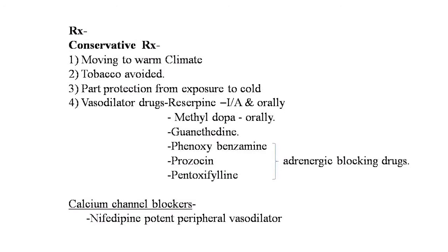Special investigations for Raynaud's disease include digital plethysmography with digital blood pressure determination, arteriography, hemoglobin, ESR, rheumatoid factors, anti-nuclear antibody determination, and protein electrophoresis. Conservative treatment should be tried first: moving to a warm climate, avoiding tobacco, protecting the part from cold exposure, and reducing occupational exposure. Various vasodilator drugs have been used: reserpine (intra-arterial and oral), methyldopa, guanethidine, phenoxybenzamine, prazosin, and pentoxifylline. Calcium channel blockers such as nifedipine — a potent peripheral vasodilator — have also been used.